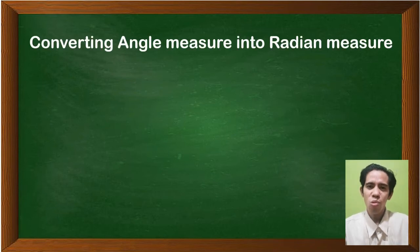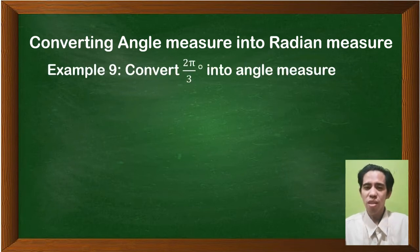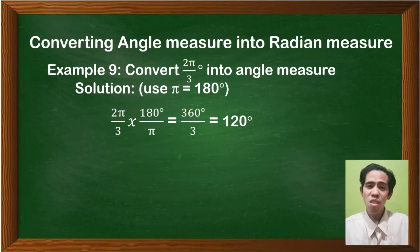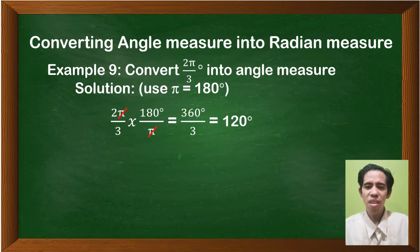Now, converting angle measure into radian measure: convert 2π/3 into angle measure. Solution: 2π/3 times 180 degrees over π. Cancel out π and we have 360 degrees over 3. So 360 divided by 3 is 120 degrees.